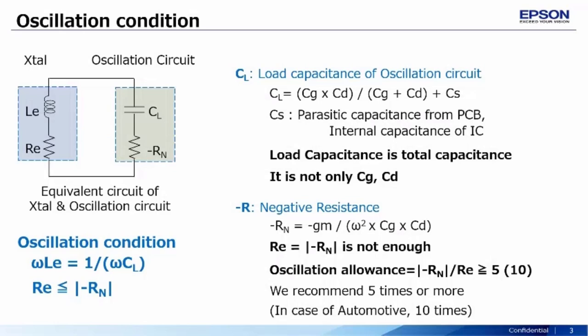For reliable circuit operation, it is recommended that the negative resistance is at a minimum 5 times or more the maximum resistance value of the crystal. For oscillator circuits used in automotive applications, we recommend 10 times the value.